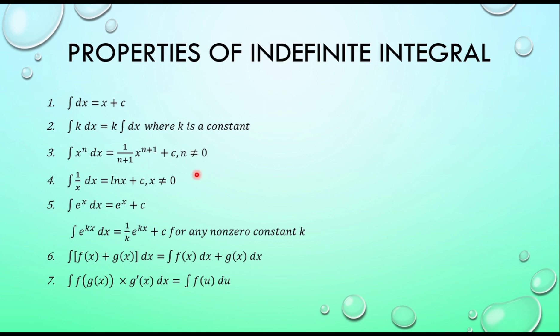Property four: the integral of 1 over x dx is equal to ln|x| plus C, where x must not equal 0. Property five: the integral of e raised to the power x dx is equal to e raised to the power x plus C. Additionally, the integral of e raised to the power kx dx is equal to 1 over k times e raised to the power kx plus C, for any non-zero constant k.